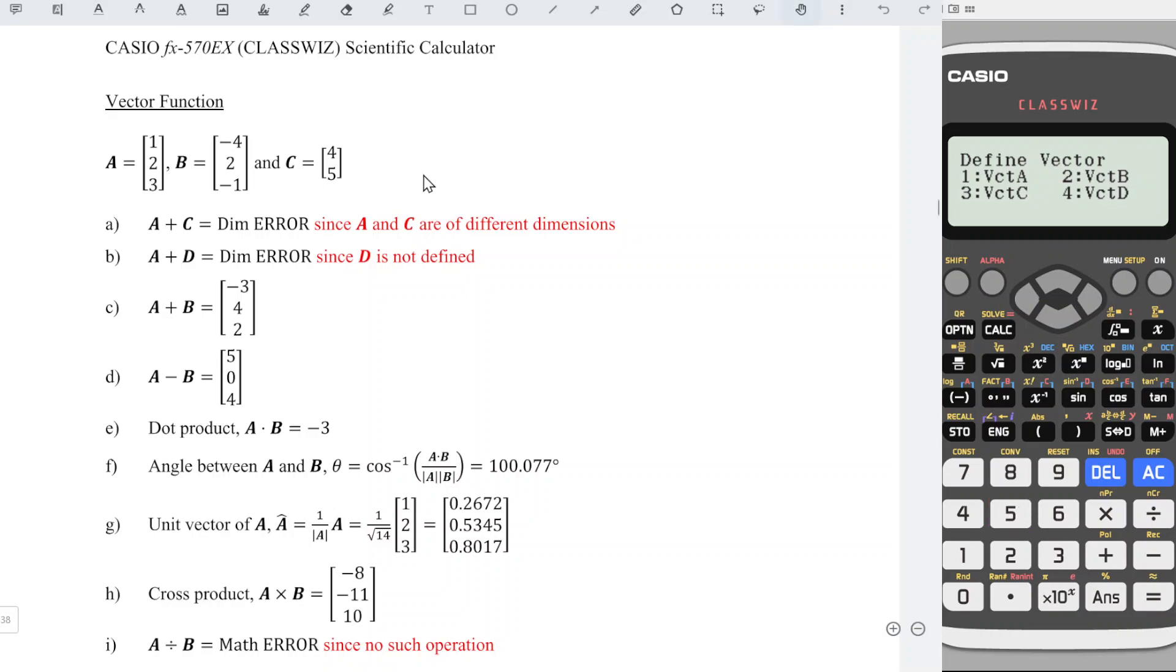We have three vectors here. First, vector A. Choose dimension 3 since we have three components. Enter the values accordingly: 1, 2, 3. Done. Now define vector B, dimension 3: negative 4, 2, negative 1.